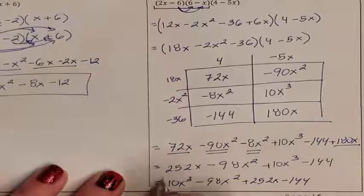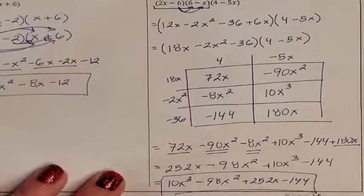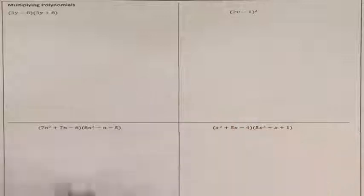So my final answer is 10x to the third minus 98x squared plus 252x minus 144. The last page has four practice problems for independent practice.